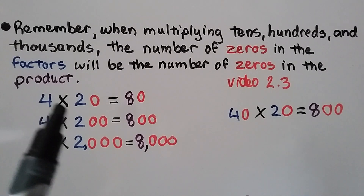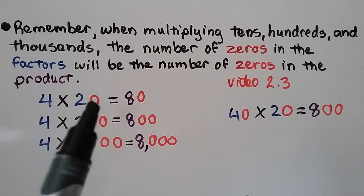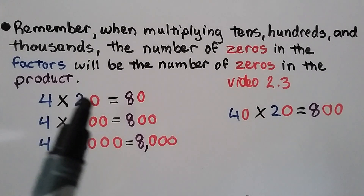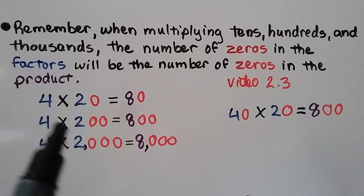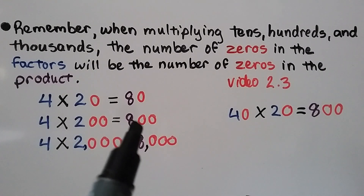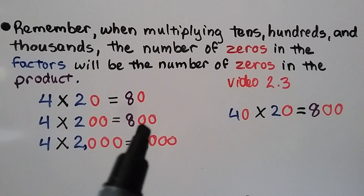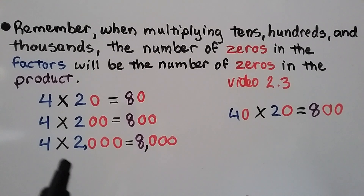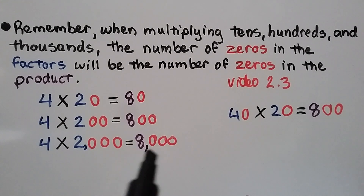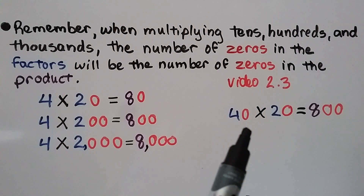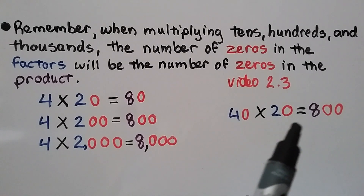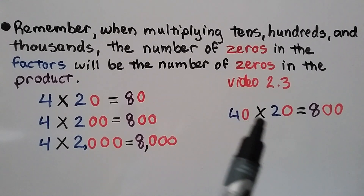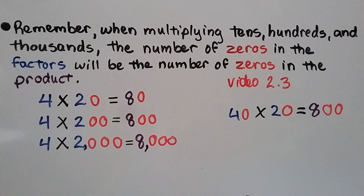For example, 4 times 20 has one zero in the factors, so we think 4 times 2 equals 8 and put one zero in the product: 80. For 4 times 200, we multiply 4 times 2 equals 8, and with two zeros in the factors, we put two zeros in the product: 800. The same with 2,000 — three zeros in the factors gives three zeros in the product. And for 40 times 20, the basic fact is 4 times 2 equals 8, with two zeros in the factors, giving two zeros in the product: 800.